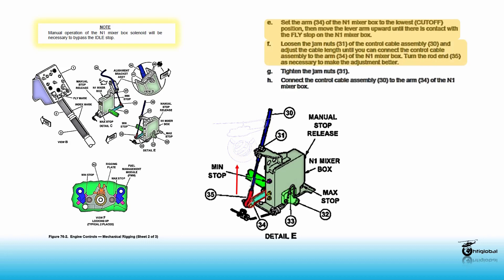Loosen the jam nut 31 of the control cable assembly 30 and adjust the cable length until you can connect the control cable assembly to the arm 34 of the N1 mixer box. Turn the rod end 35 as necessary to make the adjustment better. Tighten the jam nut 31 and connect the control cable assembly 30 to the arm 34 of the N1 mixer box.